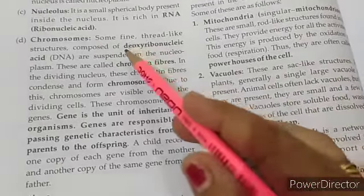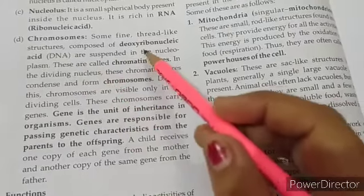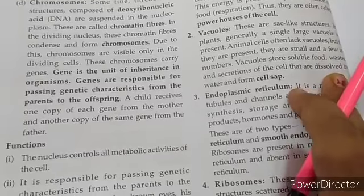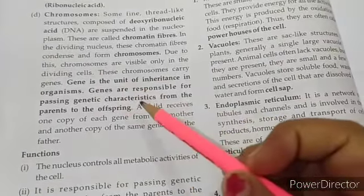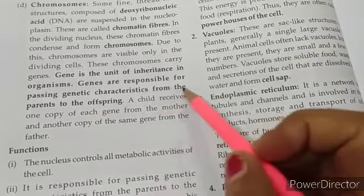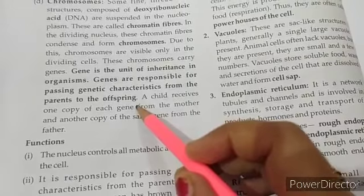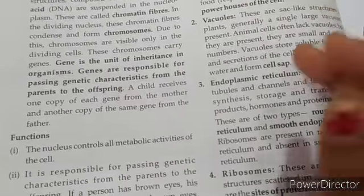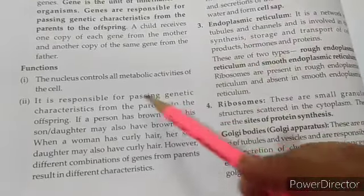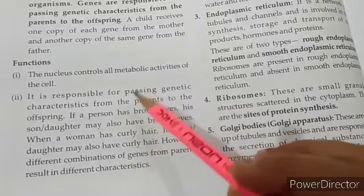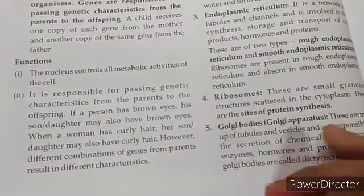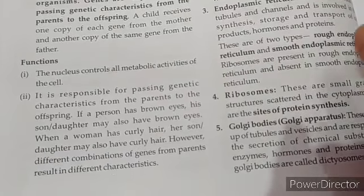Chromosome is a thread-like structure present in the nucleus, composed of DNA (deoxyribonucleic acid). Chromosomes carry genes. Genes are the units of inheritance in an organism — they are responsible for passing genetic characteristics from parent to offspring. For example, if parents have brown eyes, their children will also have brown eyes; if parents have curly hair, their children will also have curly hair. The nucleus controls metabolic activity and transfers genetic characteristics to offspring.